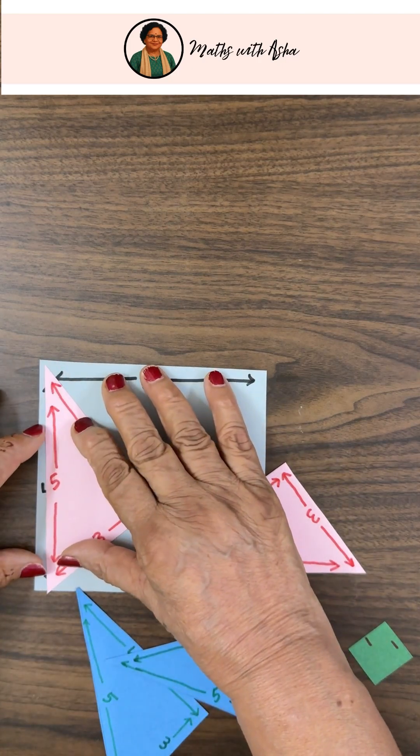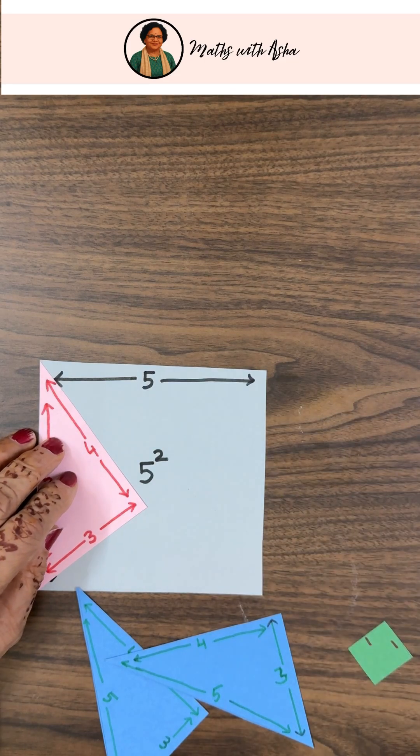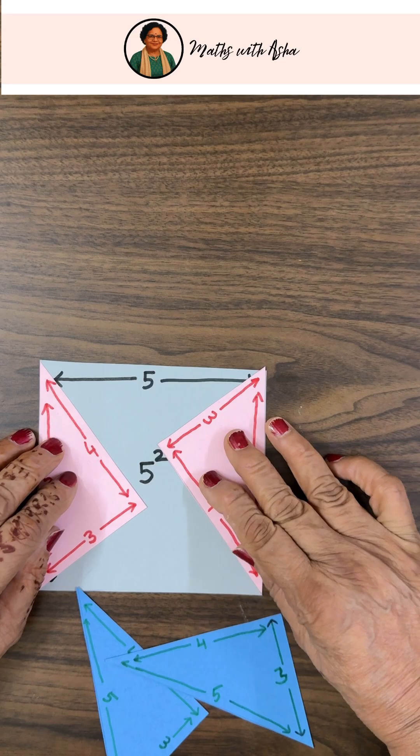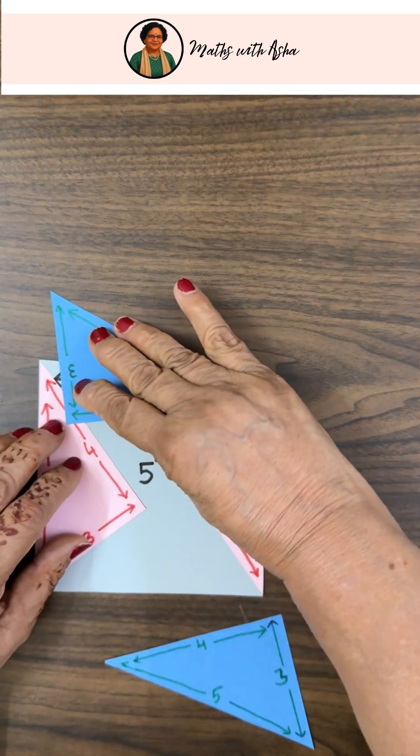And this was placed on a square of side 5 units, which is the length of the hypotenuse, in this way.